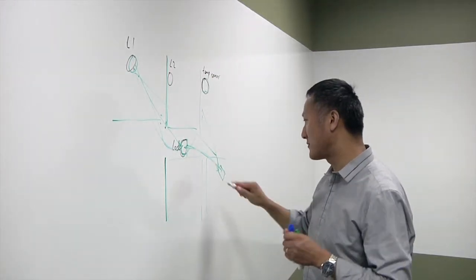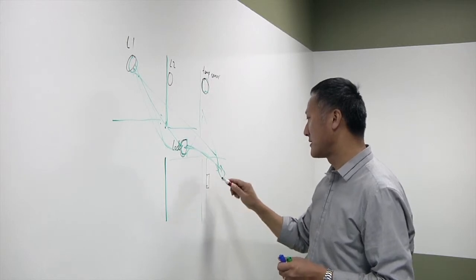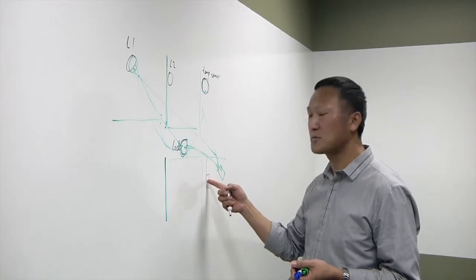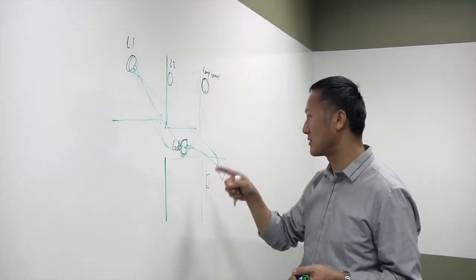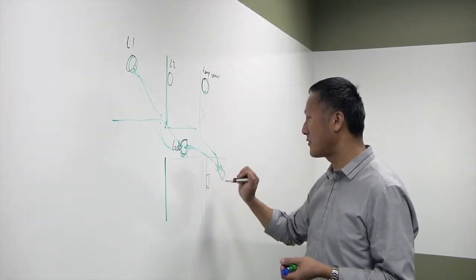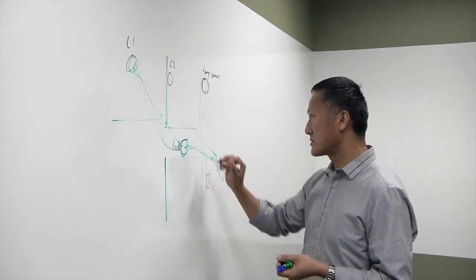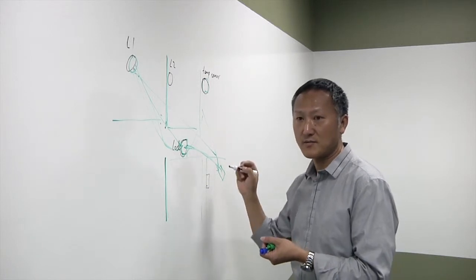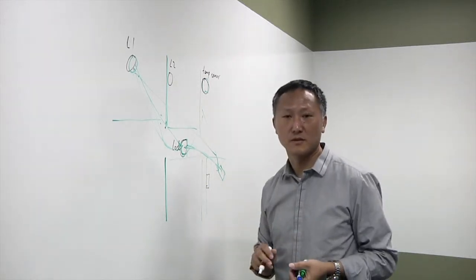So imagine you also have a light switch here, and this light switch is also Bluetooth Low Energy enabled. You can use this light switch instead of your smartphone to control. Then in that case, you can leave your phone off, and one of them will act as a master. But if they're out of range, then they cannot communicate to each other effectively.